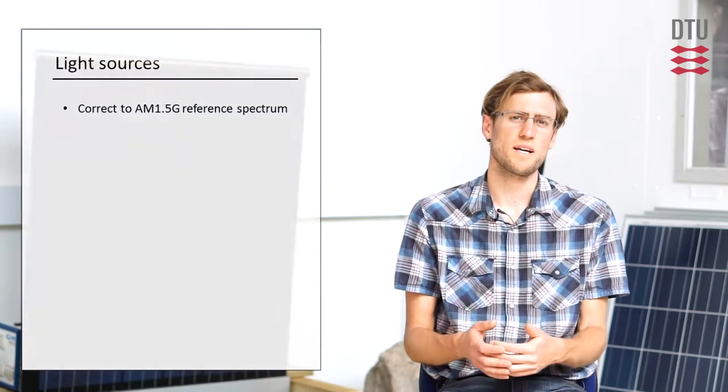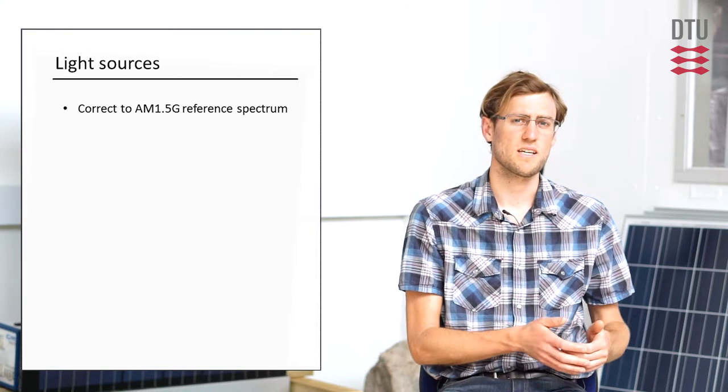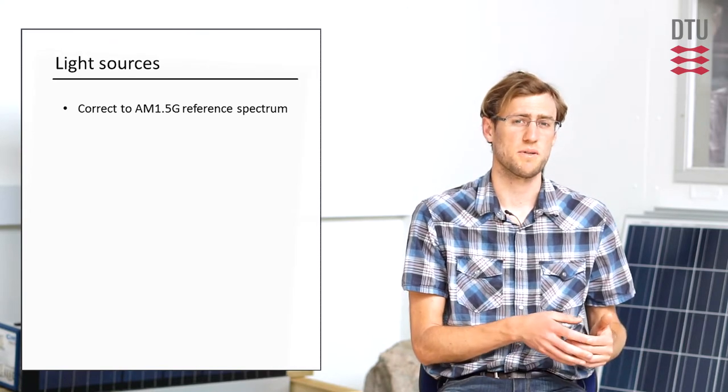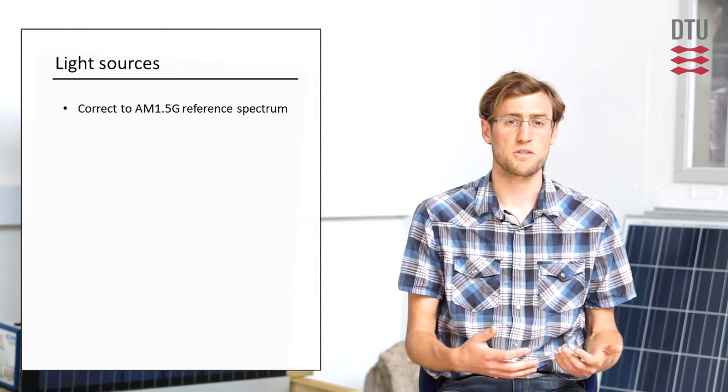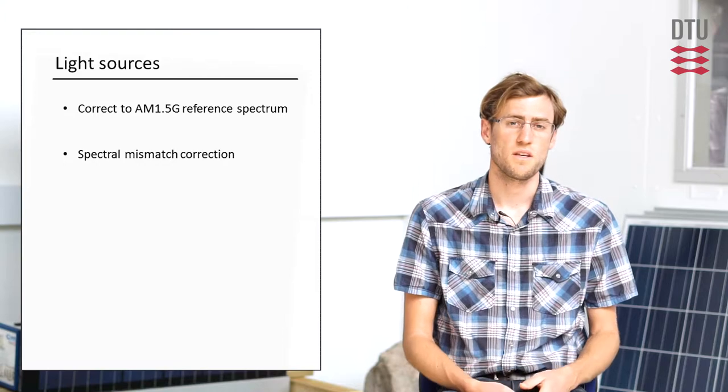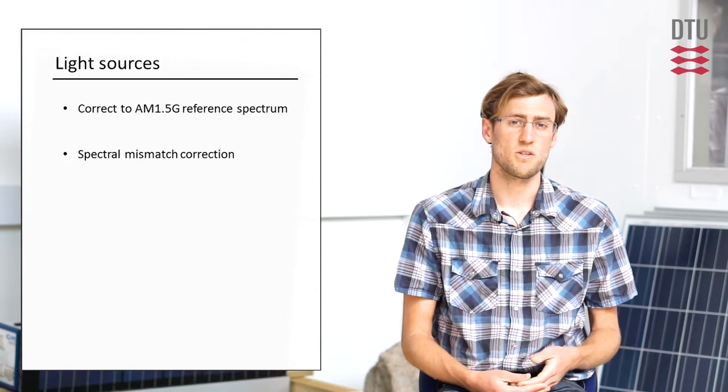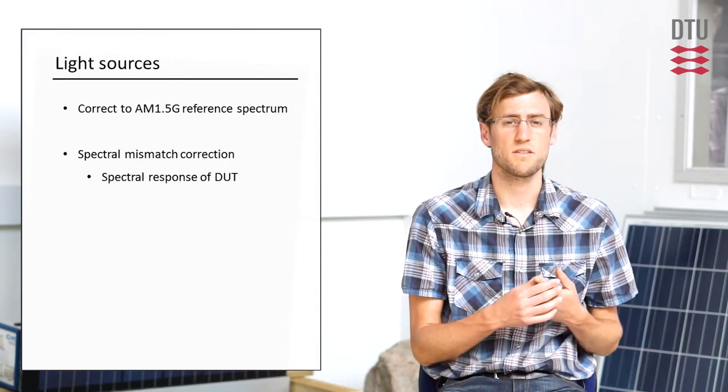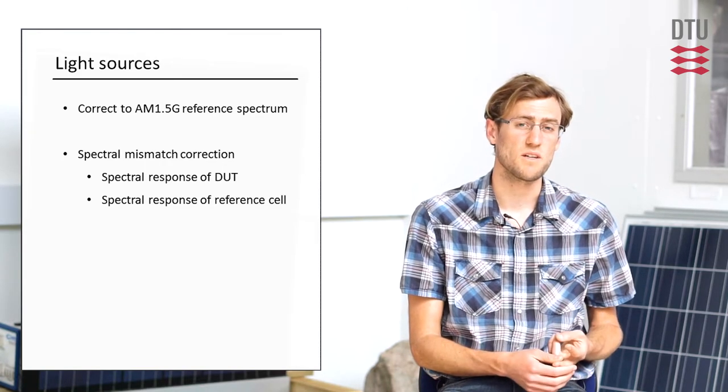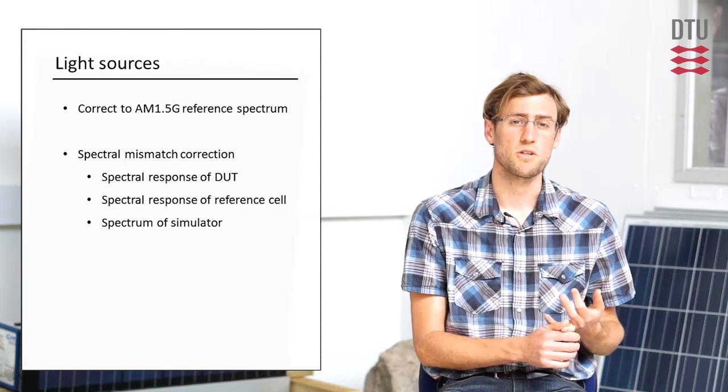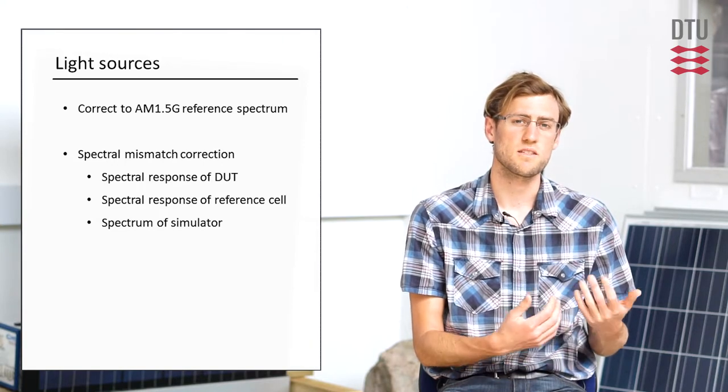Regardless of which light source is used, whether it's xenon, halogen, or even tungsten, it's important to note that we can always correct back to an AM 1.5G reference spectrum if we know a few things. This is called the spectral mismatch correction procedure. We need to know three things: the spectral response of the device under test, the spectral response of the reference cell, and the spectrum of the simulator itself.